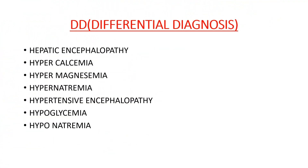The differential diagnosis: these types of symptoms and signs also present in other conditions, which include hepatic encephalopathy, electrolyte imbalance like hypercalcemia, hypermagnesemia, and hypernatremia, PRES syndrome (posterior reversible encephalopathy syndrome), hypertensive encephalopathy, hypoglycemia, and hyponatremia.